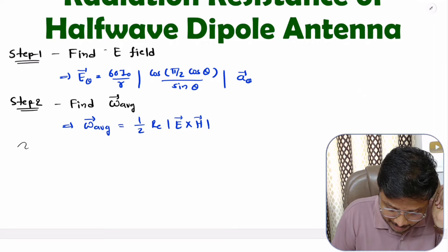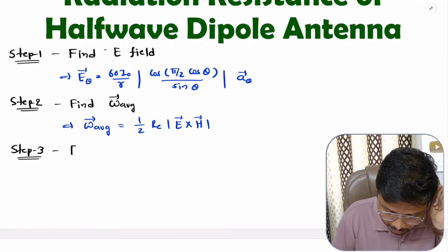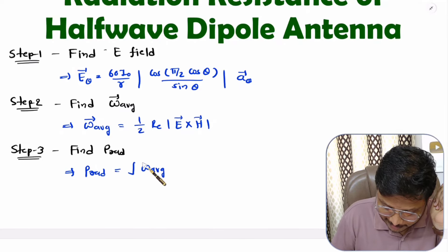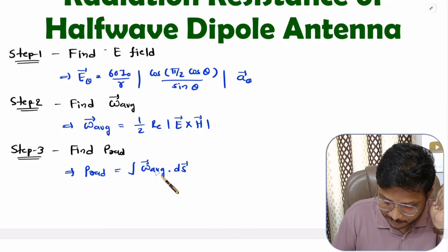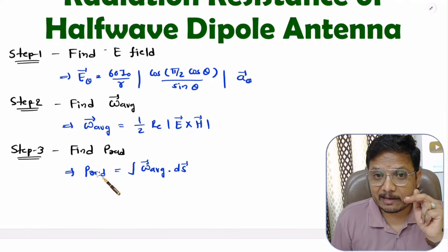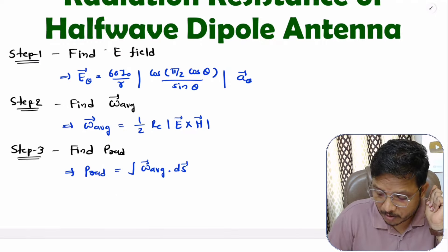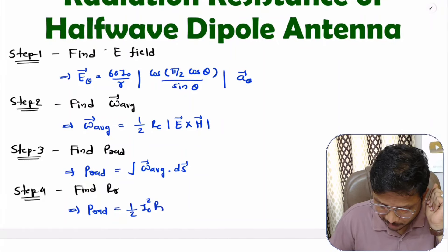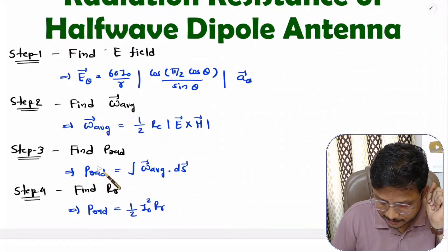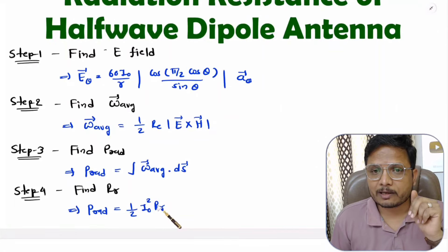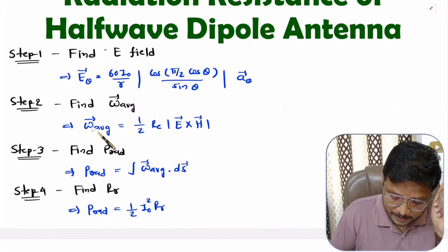In the third step we calculate radiated power as the surface integration of average power density. Once we have radiated power, we can identify radiation resistance — since radiated power also equals one-half of I₀² times Rr. By comparing those two equations we can identify the radiation resistance. Those are the four steps, which we will now apply to the half-wave dipole antenna.